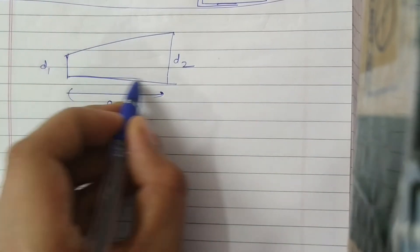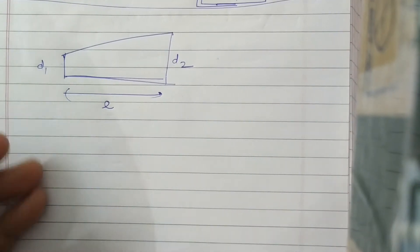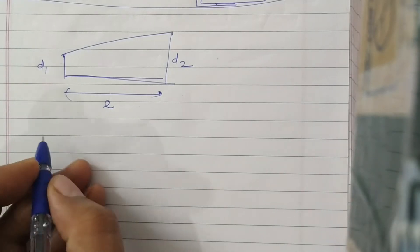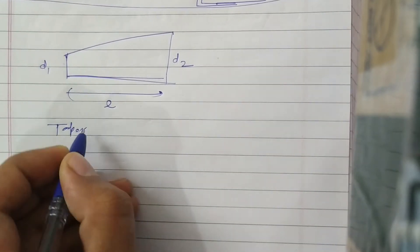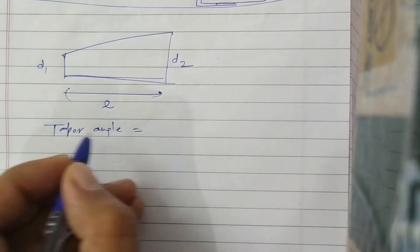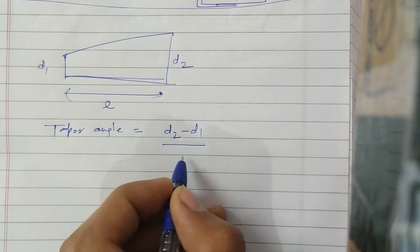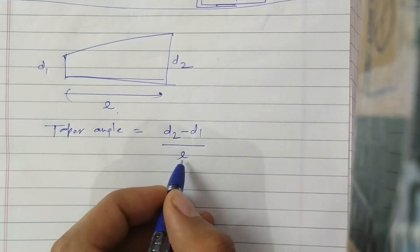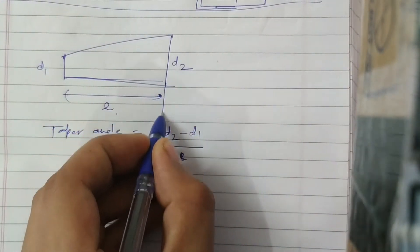But I have to calculate the taper angle. To calculate the taper angle, there is a formula: taper angle is equal to (d2 minus d1) upon l. L is the horizontal length between two diameters where the taper has to be calculated.